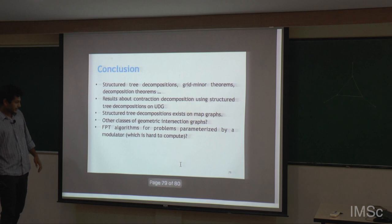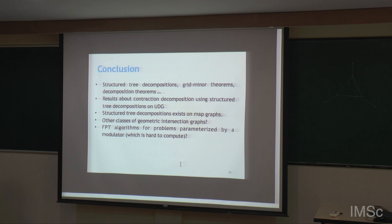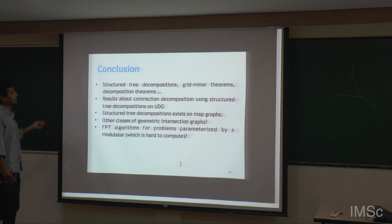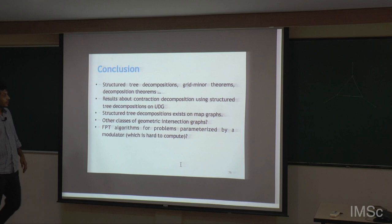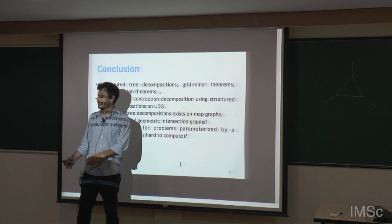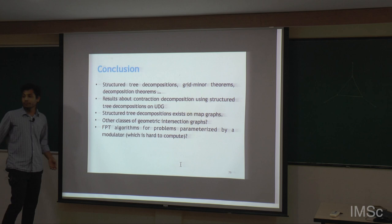In conclusion, we have seen how structured tree decomposition helps in designing algorithms, and how to use structured decomposition along with the grid minor theorem and decomposition theorem. There is also a notion of contraction decomposition — rather than vertex or edge deletion — and we can get a contraction decomposition using structured tree decomposition on unit disk graphs as well, though that wasn't covered. These kinds of tree decompositions also exist on map graphs, giving sub-exponential time algorithms for various problems on map graphs.